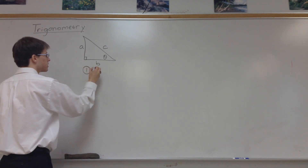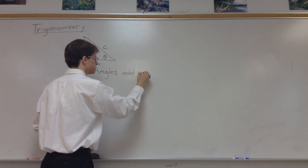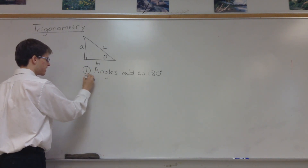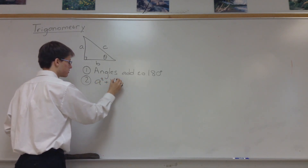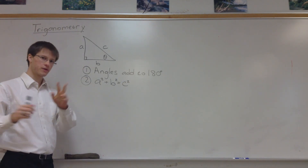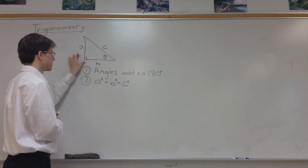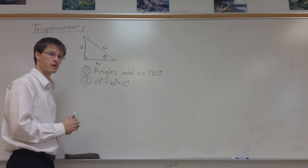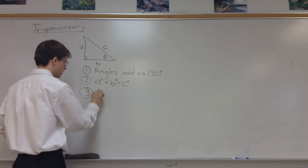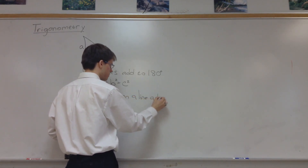There are four important rules to keep in mind. First, the angles inside a triangle add to 180 degrees. Second is the Pythagorean theorem, which states that a² + b² = c². The other two rules are more about geometry in general. Third: angles on a line add to 180 degrees.